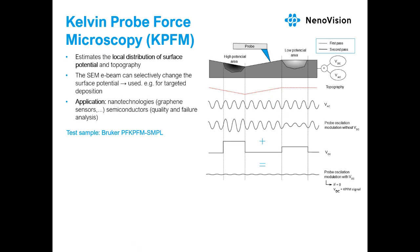Another technique for measuring electrical properties is Kelvin probe force microscopy. KPFM is measured using two passes — topography is measured in the first pass, and using that trajectory in the second pass, we detect the contact potential difference between the tip and the surface. This way we obtain the local distribution of the surface potential: higher or lower potential areas change the amplitude of the oscillations.